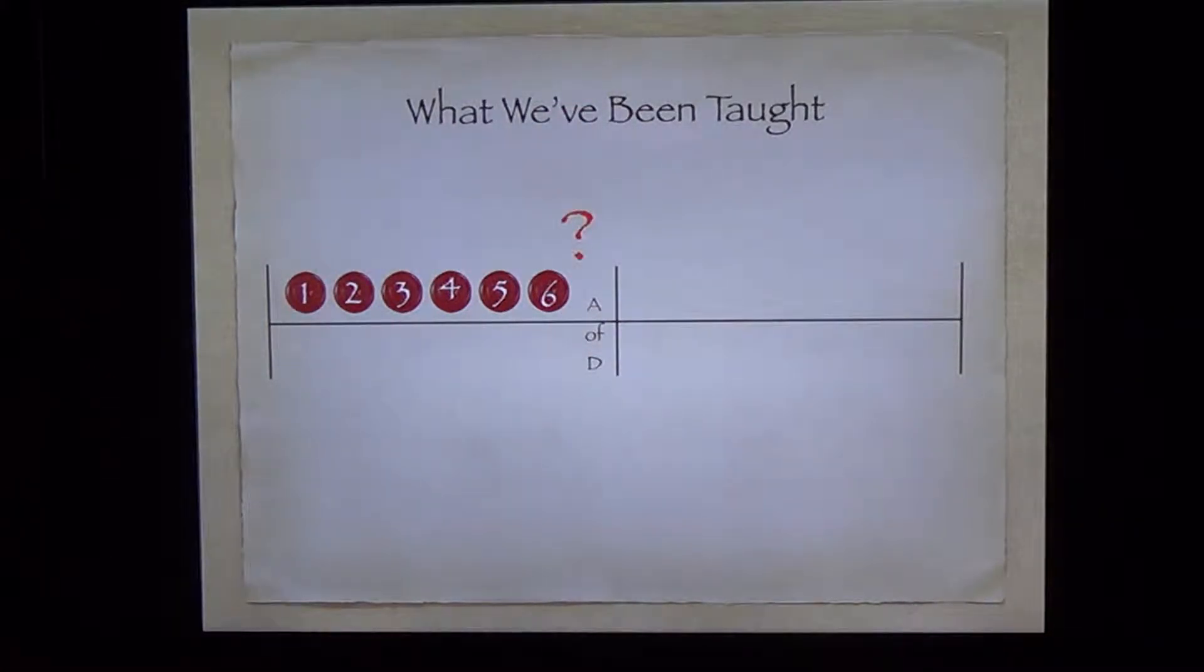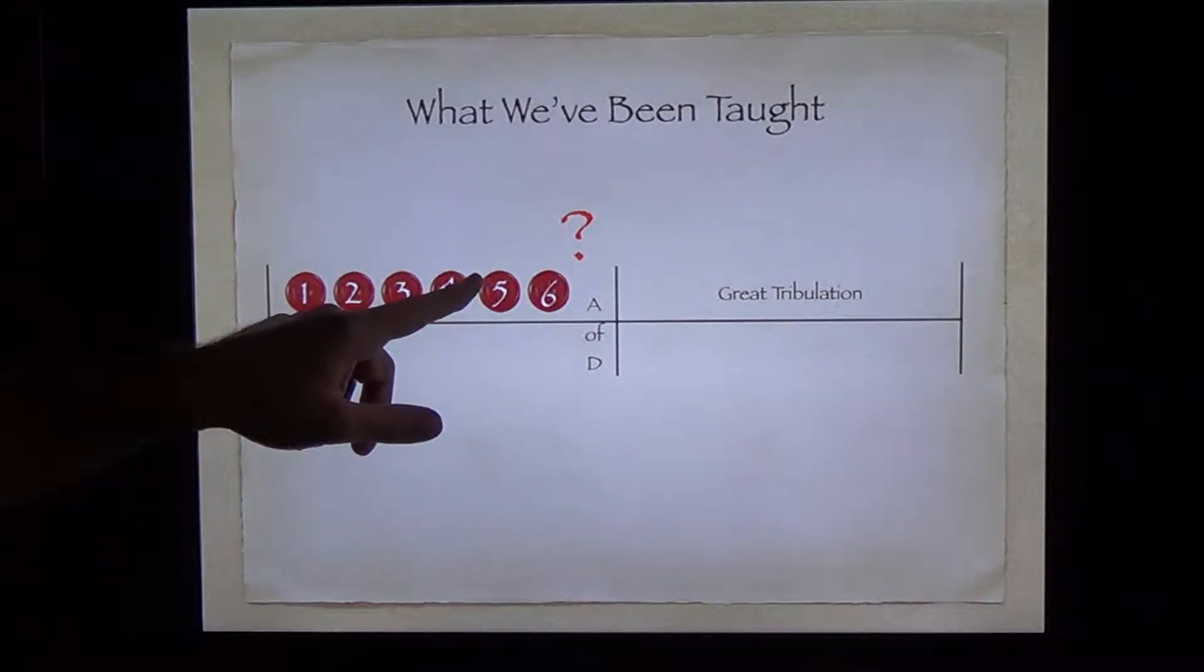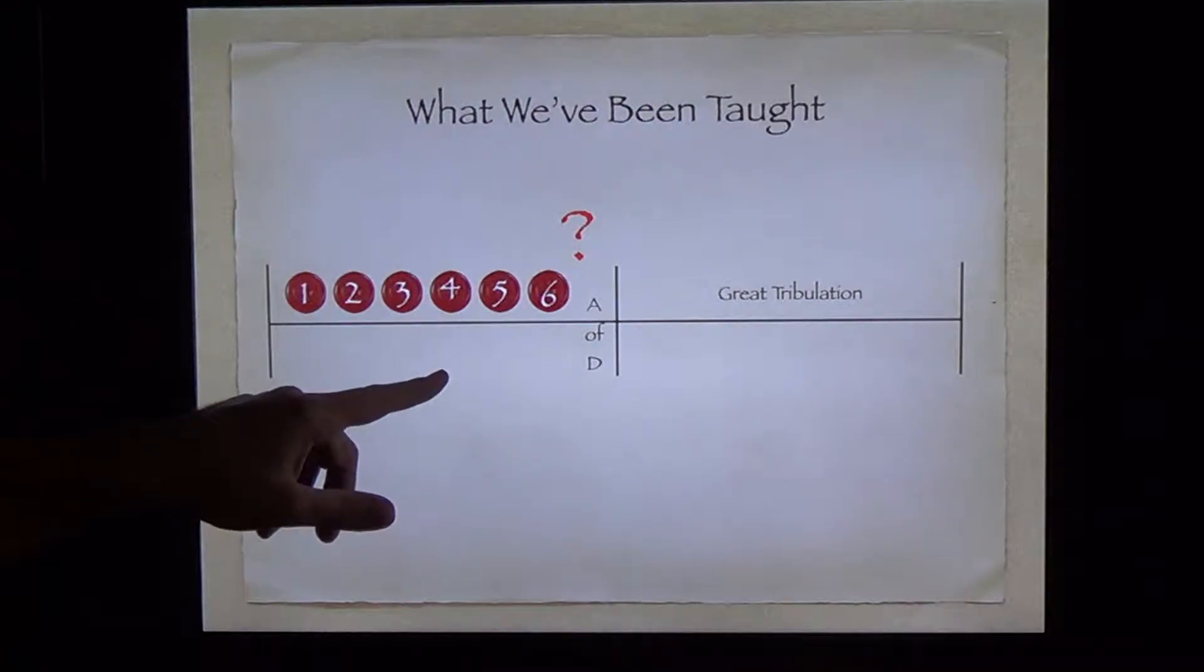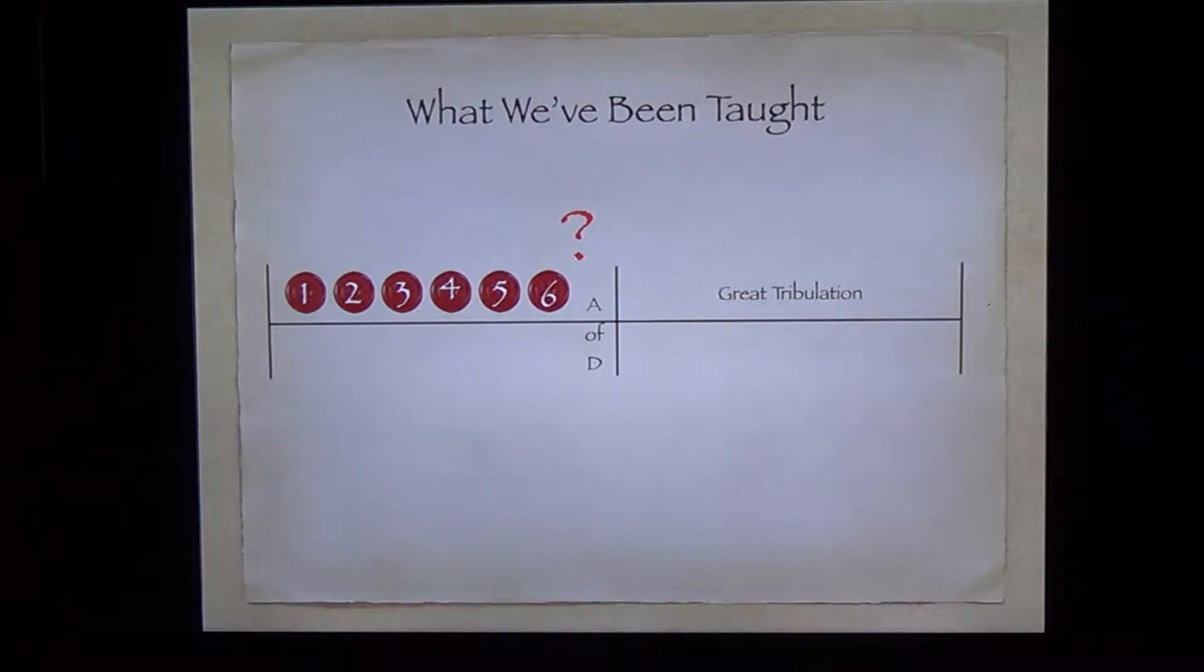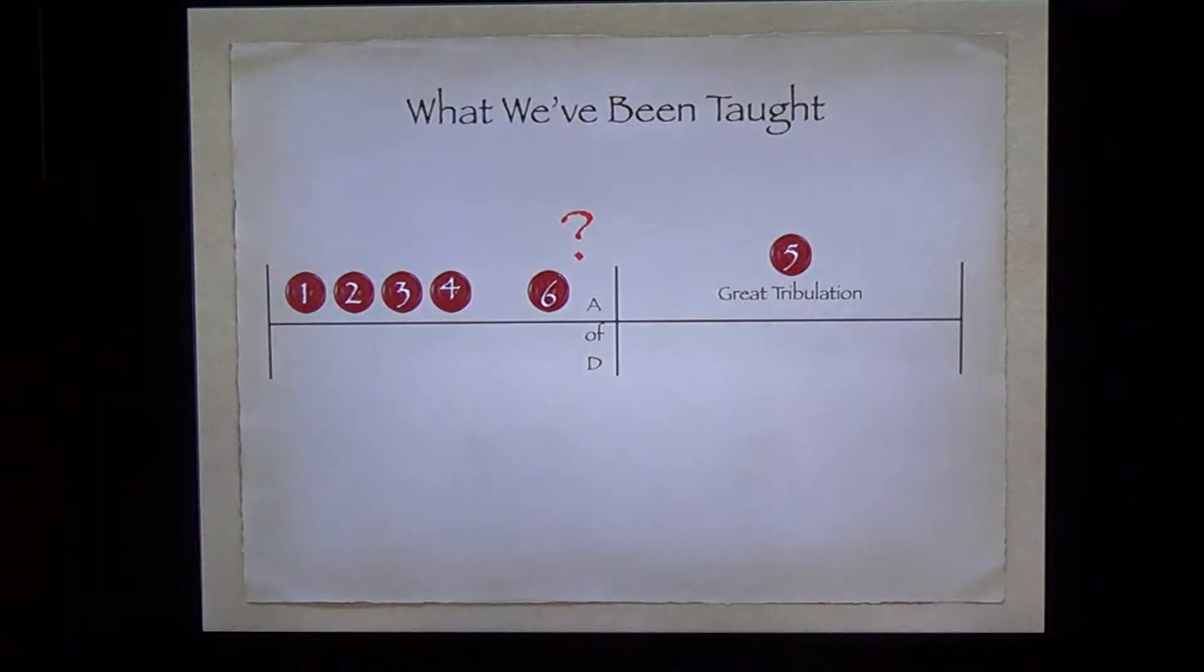But is that correct? I want to question that today and take a look at this. We know that this is Great Tribulation here in the second half of the week. But if this is Great Tribulation and the fifth seal represents the martyrdom which occurs after the beginning of sorrows during Great Tribulation, doesn't the fifth seal go here? Isn't that when martyrdom is a theme of the time during Great Tribulation?